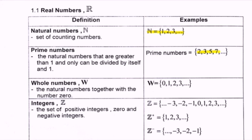Next we have the whole number, which can be denoted as capital W. The definition for the whole number is the natural numbers together with the number 0. So meaning that N is a subset of W, where W equals 0, 1, 2, 3 — or we can say the natural numbers with the number 0 added on.